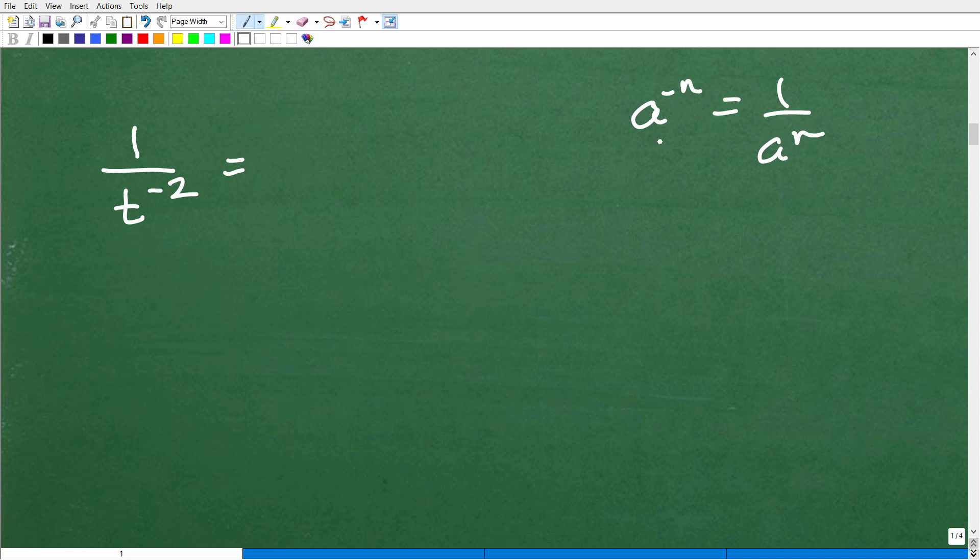Well, this property can be confusing. So technically, if I follow this property, this is equal to what? 1 over t to the negative 2 power is the same as 1 over 1 over t squared. Okay, so now I'm like, all right, what's that equal to? Right? This is following this property that we talked about. Let's go ahead and discuss this further.